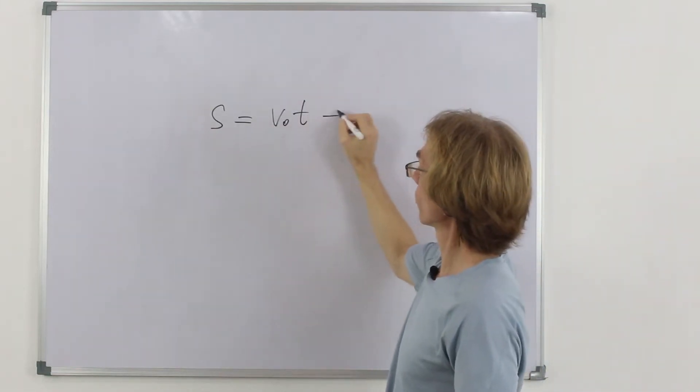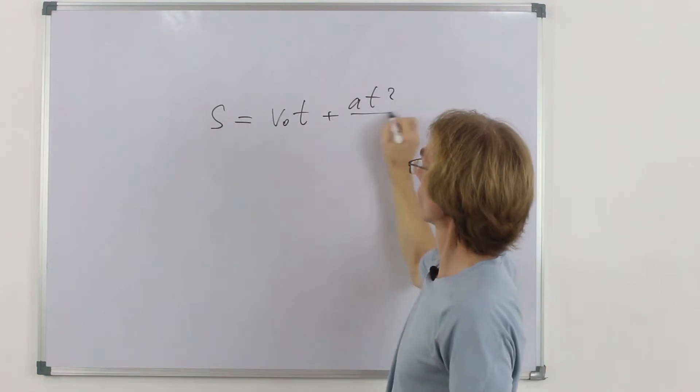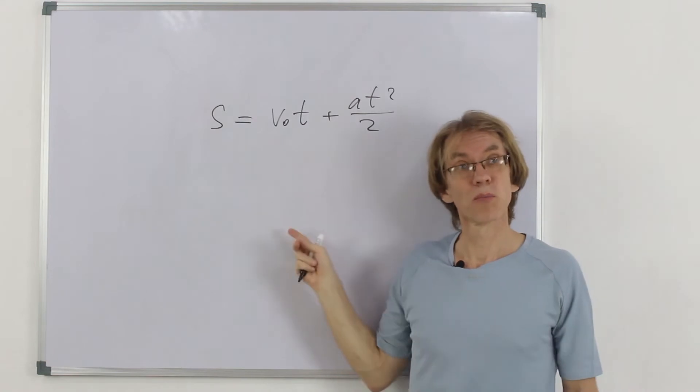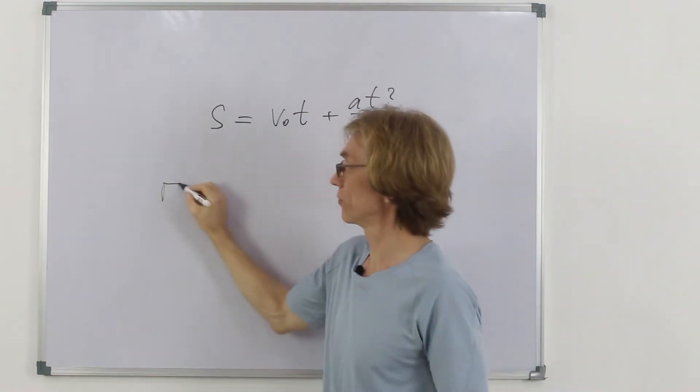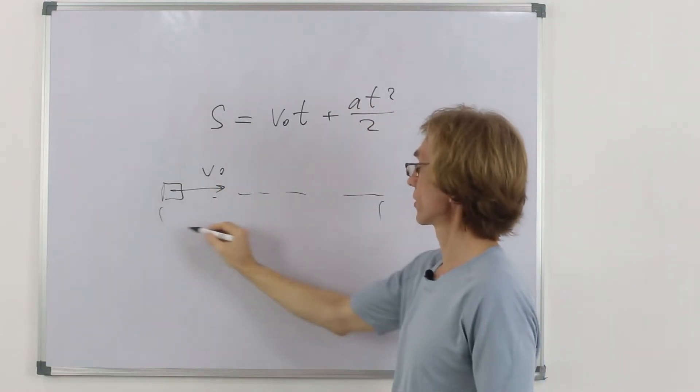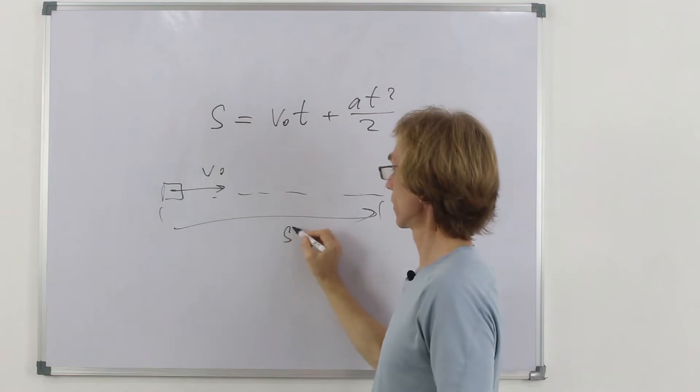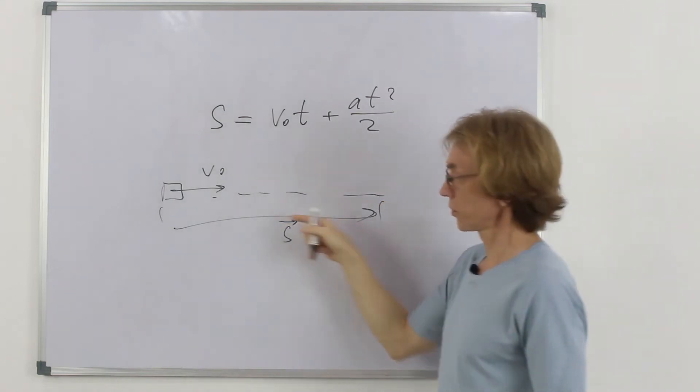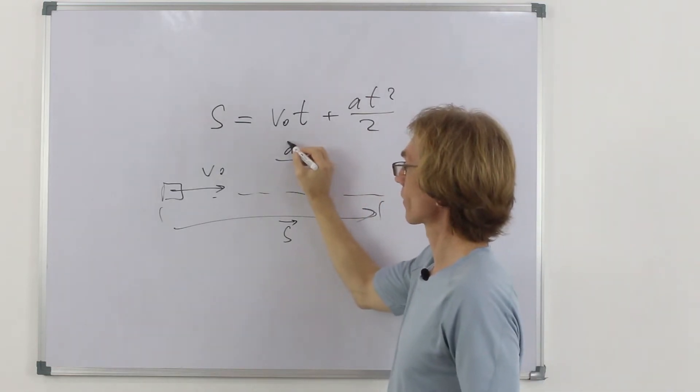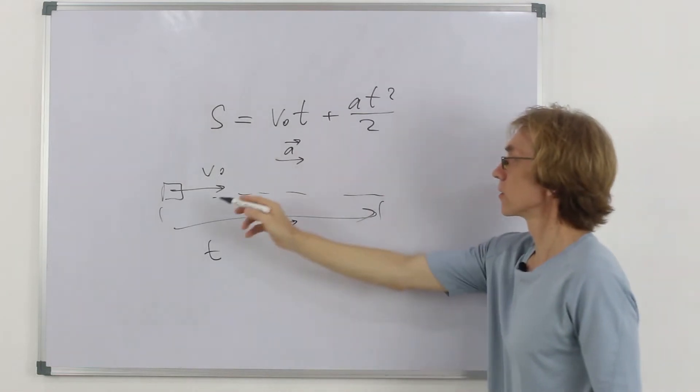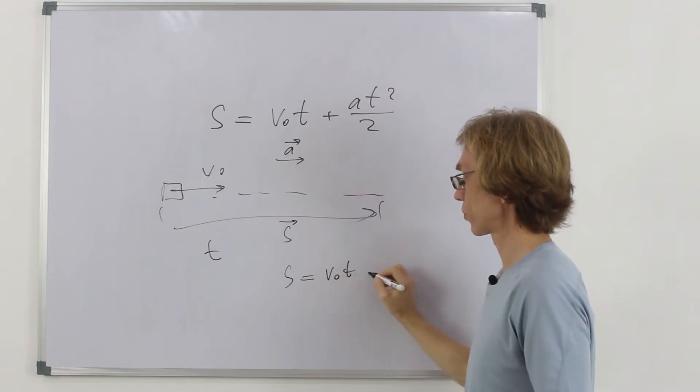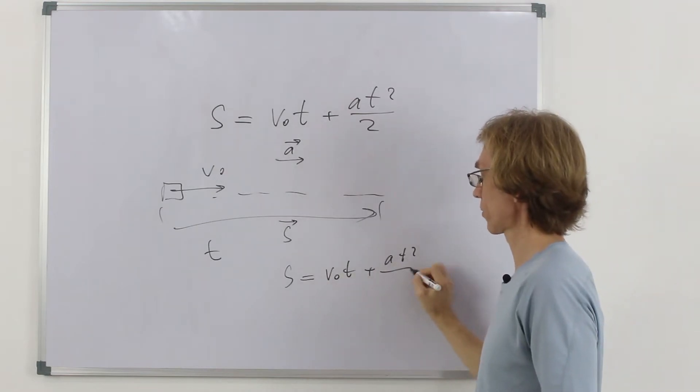So, the formula looks like that for the distance covered when the body, which initially had velocity v0, would move covering the distance s, displacement, which can be a vector also. With acceleration a, during the time t. So, how to find out this s? This s is equal to v0 t plus a t squared over 2.